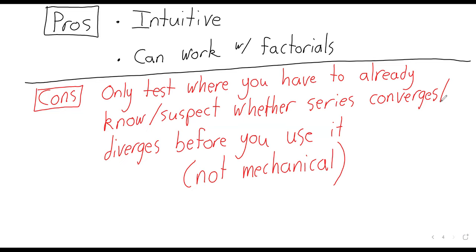With the ratio and root tests — we haven't seen them yet — you take a limit and get an answer. With the limit comparison test, you take a limit and get an answer. With the alternating series test, you ask if a series satisfies two conditions, and if it does, you get an answer.